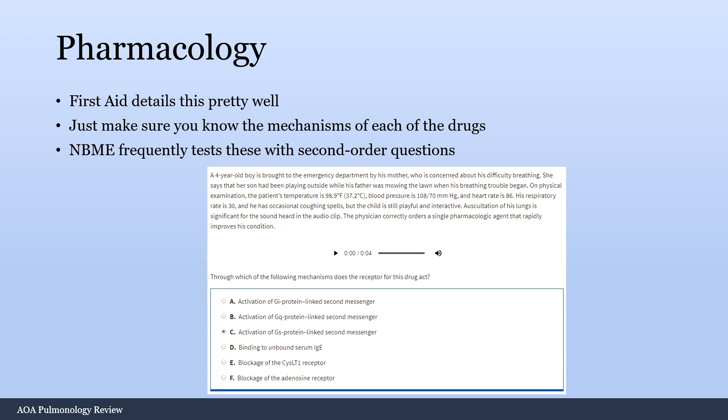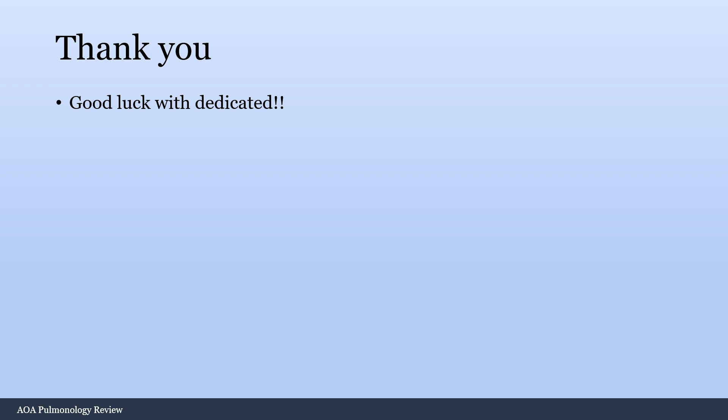Pharmacology is the last section. First Aid details this pretty well — just make sure you know the mechanisms of each drug. The NBME frequently tests these with second-order questions. For example, an asthma question about a single pharmacologic agent that rapidly improves the condition — that's probably a beta agonist — but the answer choices will be about G-protein signaling pathways like Gi, Gq, or Gs proteins. You need to know all of these easily by reviewing the First Aid pharmacology section, as it's high yield. Thanks for watching this pulmonology review — good luck with dedicated study!